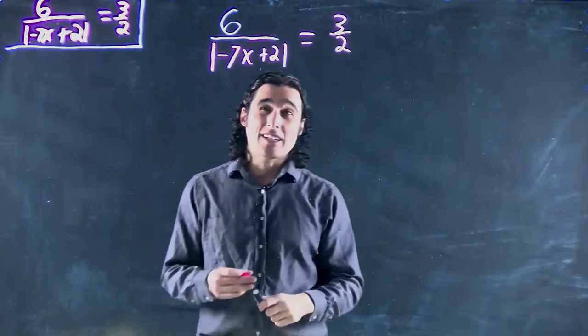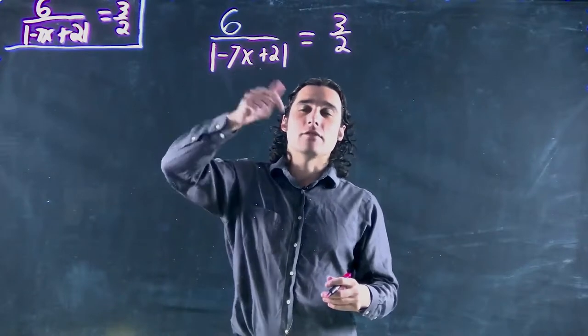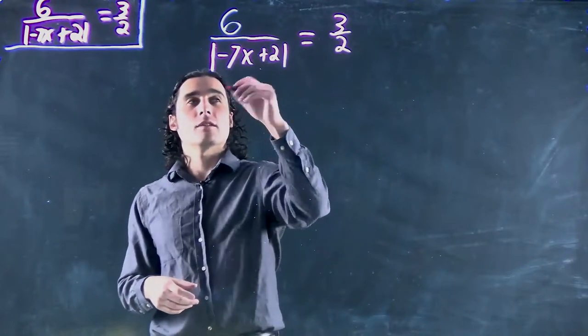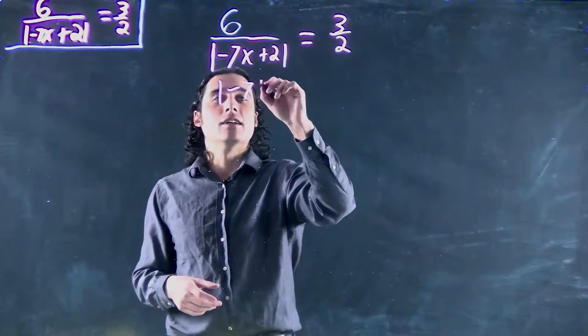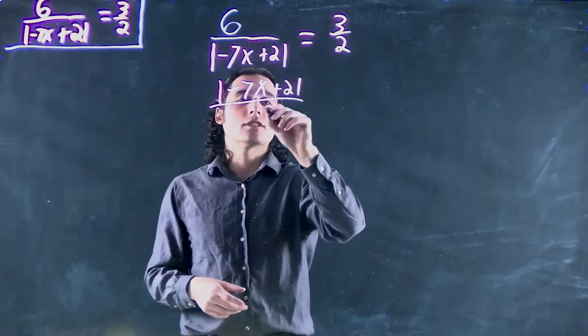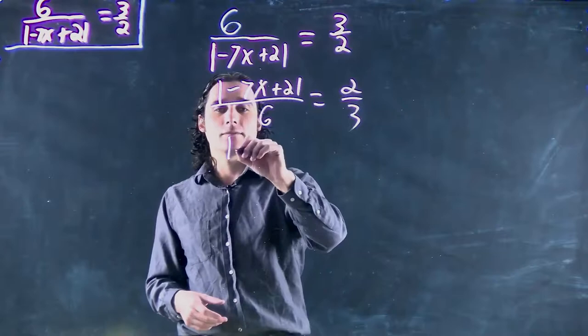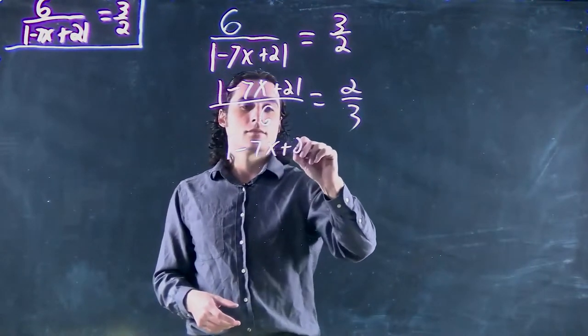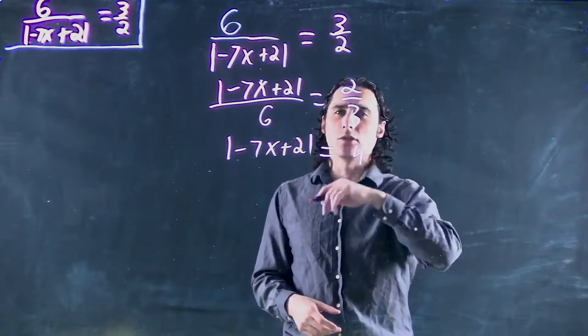So if we want to get to the absolute value, easiest thing we can do is invert both sides. Flip both sides. So we got minus 7x plus 2, absolute value of that over 6 equals 2 over 3. Multiply both sides by 6 to get rid of it. So that's going to equal 4.